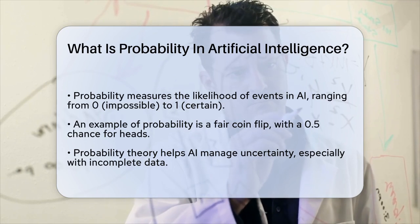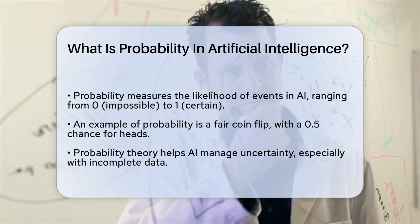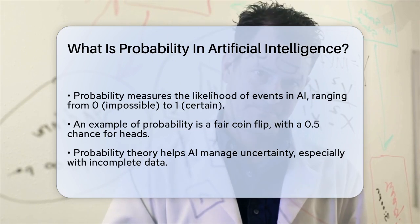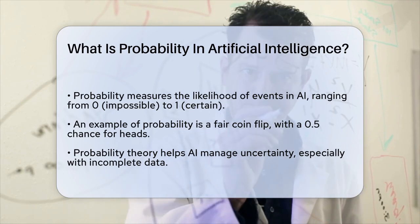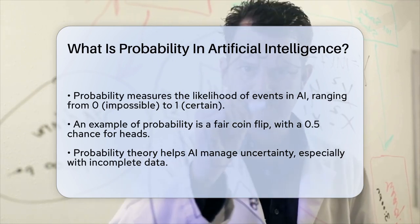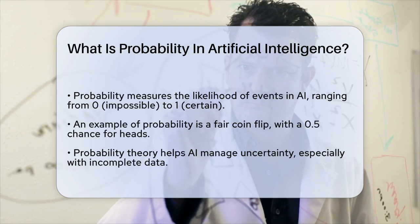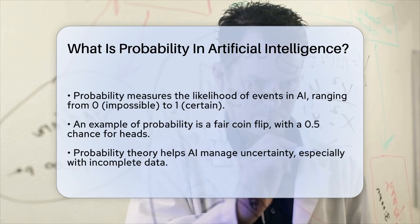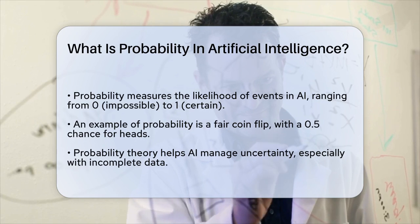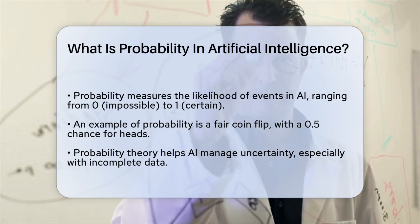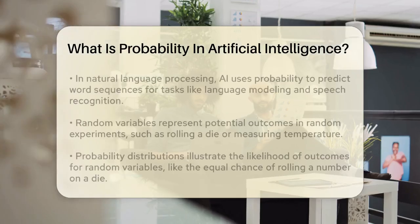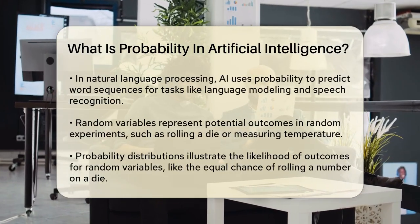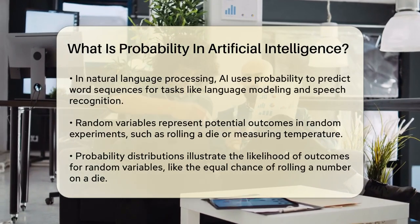In AI, probability theory is crucial for managing uncertainty. AI systems often deal with incomplete or uncertain data, and probability helps them make informed decisions despite this uncertainty. For instance, in natural language processing, AI models use probability to predict the likelihood of different word sequences, which helps in tasks like language modeling, speech recognition, and machine translation.